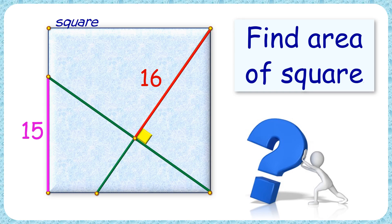Welcome to this interesting question. Given to us in a square, we have two line segments which are perpendicular to each other. The length of this red line segment is 16 cm and this pink line segment is 15 cm. The exciting part is with this limited data we have to find the area of the square.